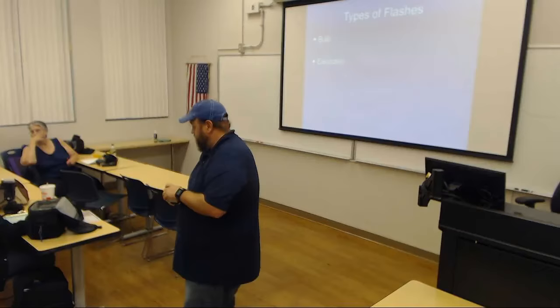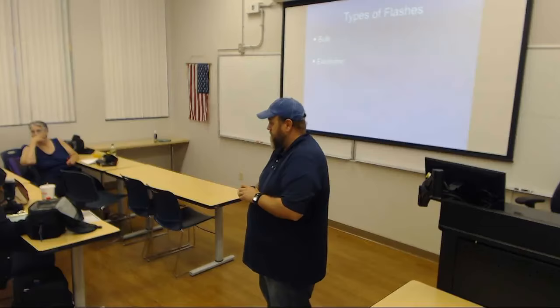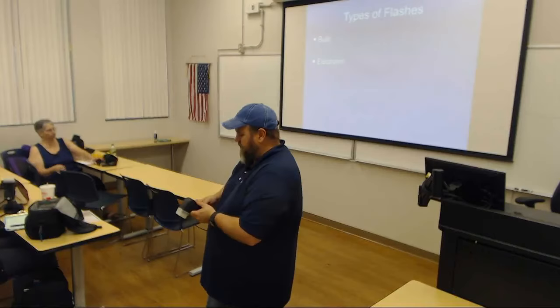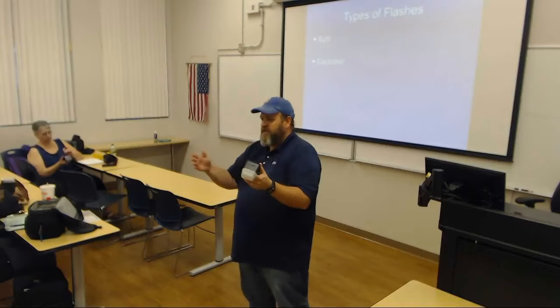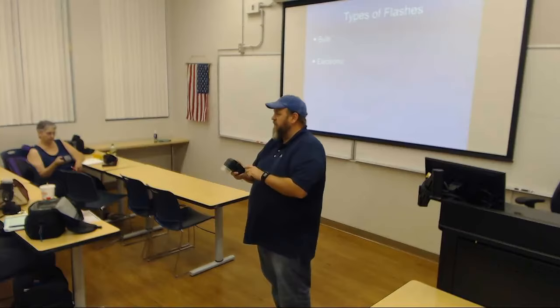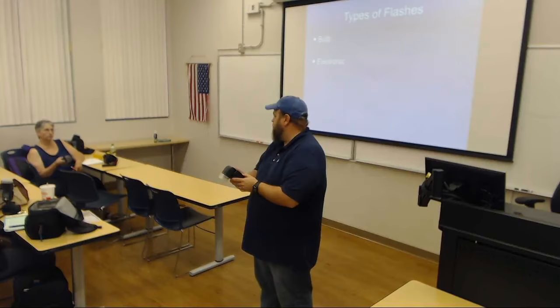To clarify: in automatic mode, the flash controls itself; in manual mode, the photographer controls it. To adjust the power in manual mode, look at the back of your flash — there's a button on the left-hand side that says 'mode.' Push that button until you get the letter M in the top left-hand corner.